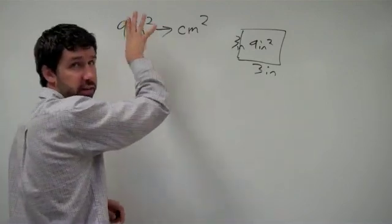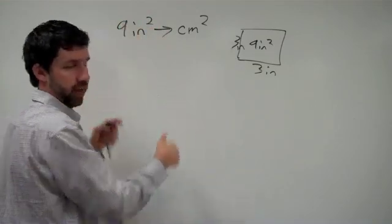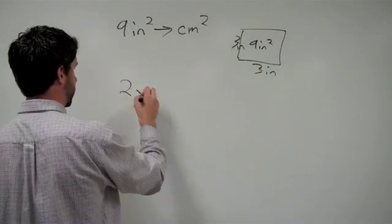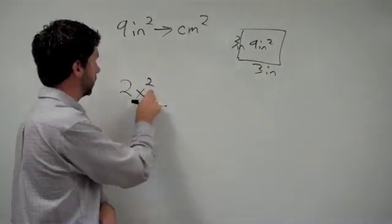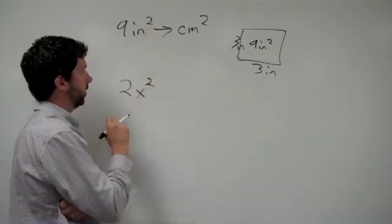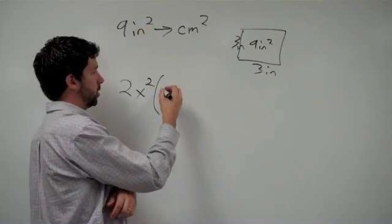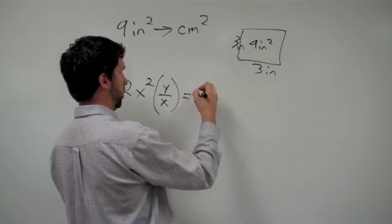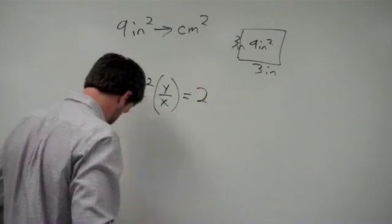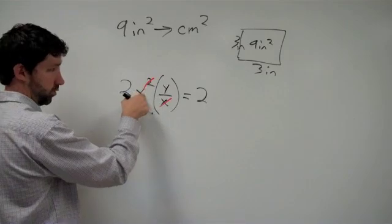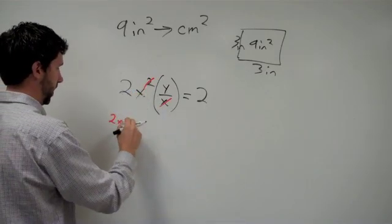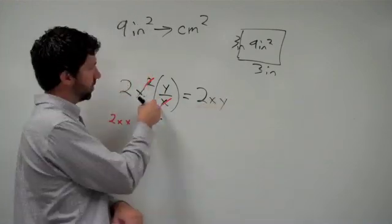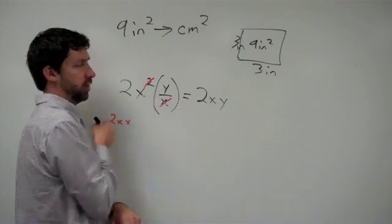So remembering that units cancel just like variables do. We previously looked at something like 2x. Now we're going to look at something like 2x squared. If I take 2x squared and multiply by y over x like I did before, I end up with 2, and this x cancels out with one of these x's. There's two of them, so this is really like 2 times x times x. So I cancel with one of them, but I'm still left with the other, so I just have 2xy. If my purpose was to get rid of the x's and be left with y's, I didn't succeed.